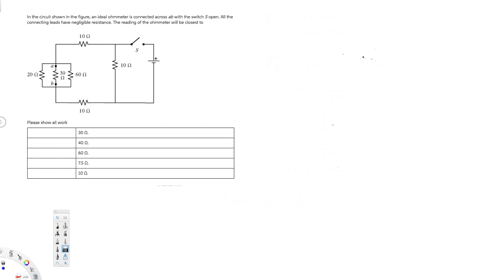Hey, what's going on guys, let's do this problem right here. The question is asking, in the circuit shown in the figure, an ideal ohmmeter is connected across AB with the switch S open. All the connecting leads have negligible resistance. The reading of the ohmmeter will be closest to what? So that's the question.